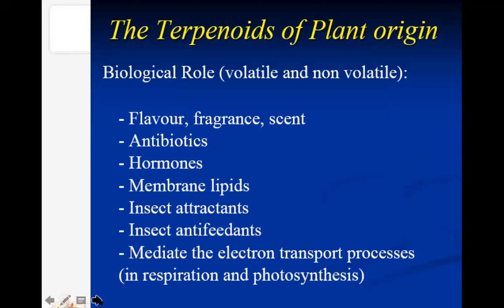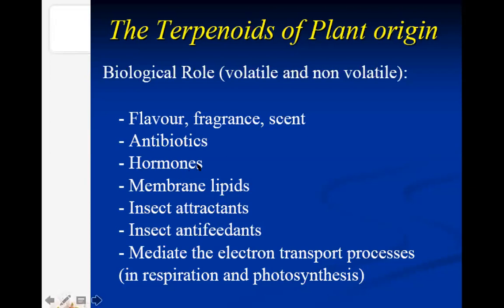Terpenoids of plant origin can be volatile or non-volatile — for example, fragrance, flavor, or scent in leaves or flowers. Many antibiotics used commercially in the pharmaceutical industry are Terpenoidal compounds, as are many hormones and membrane lipids. Some Terpenoidal compounds act as insect attractants, while others stop feeding by insects. Terpenoidal compounds also mediate electron transport processes, especially plastoquinones, so they are involved in respiration and photosynthesis of the plant.